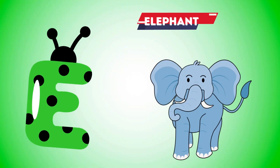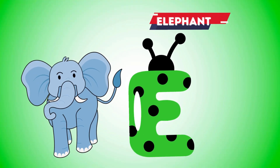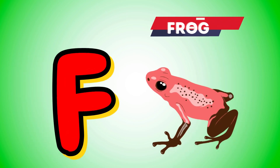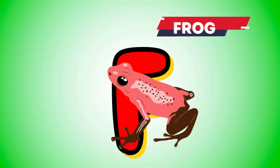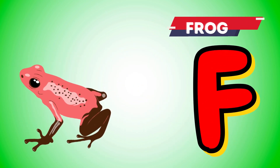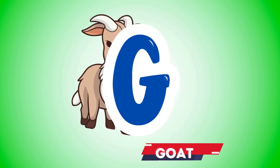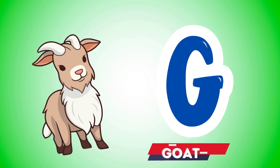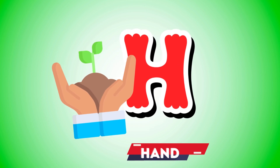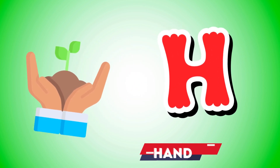E is for elephant, e-e-elephant. F is for frog, f-f-frog. G is for goat, g-g-goat. H is for hand, h-h-hand.